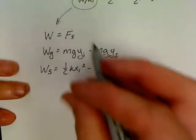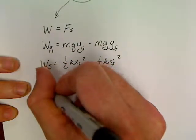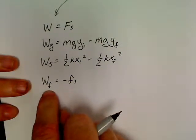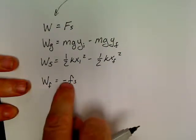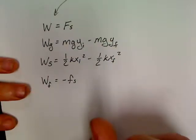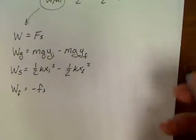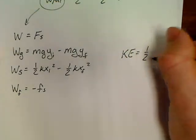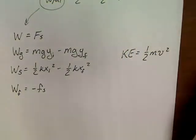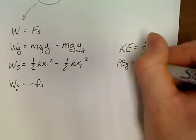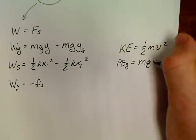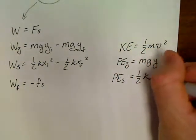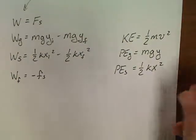Where k is your spring constant, x is displacement. We can use work done by friction as negative Fs, and likewise any resistive force we can use just a negative Fs to represent that. Other formulas you may need: make sure you know basic kinetic energy is one-half mv².